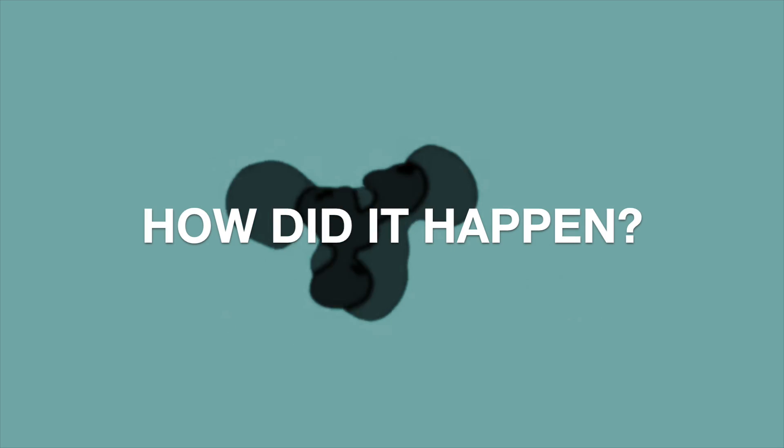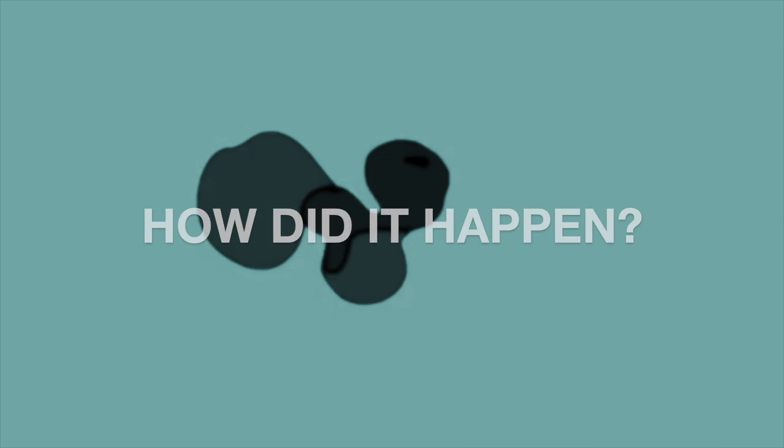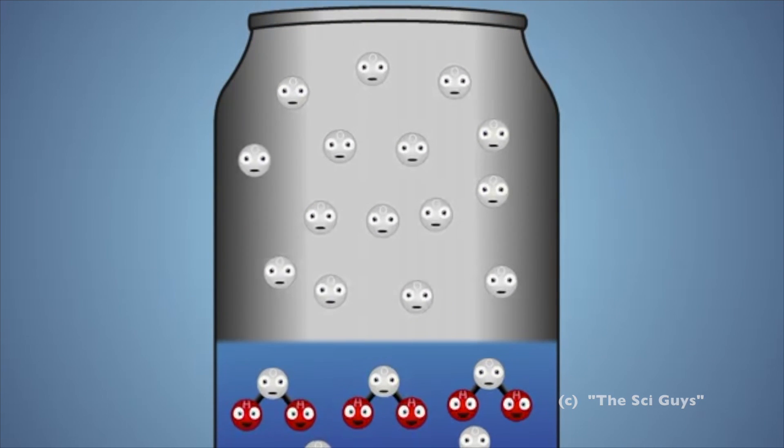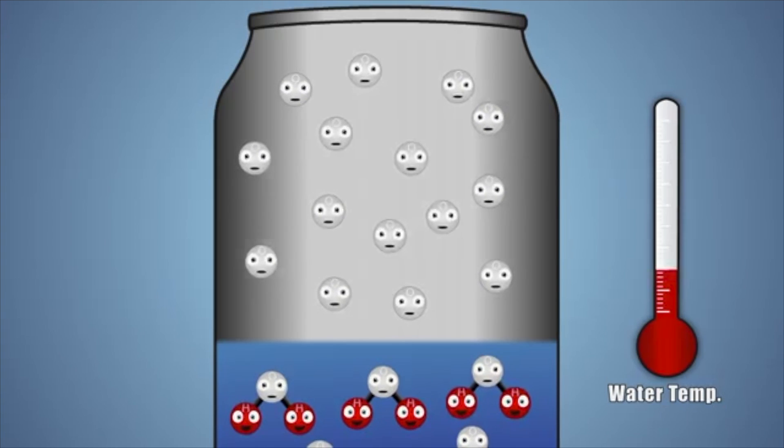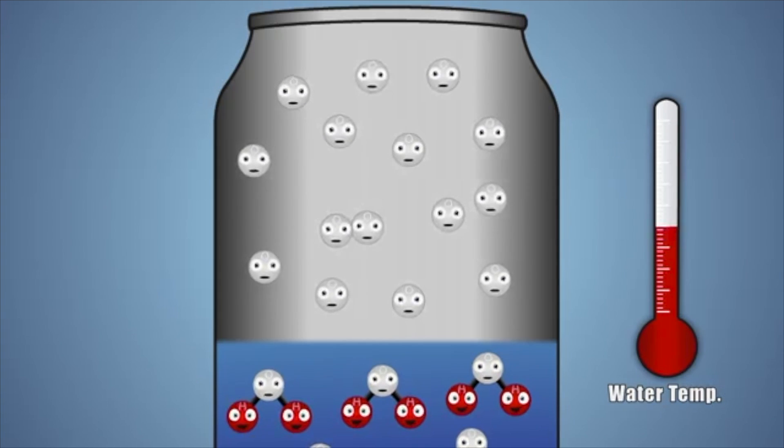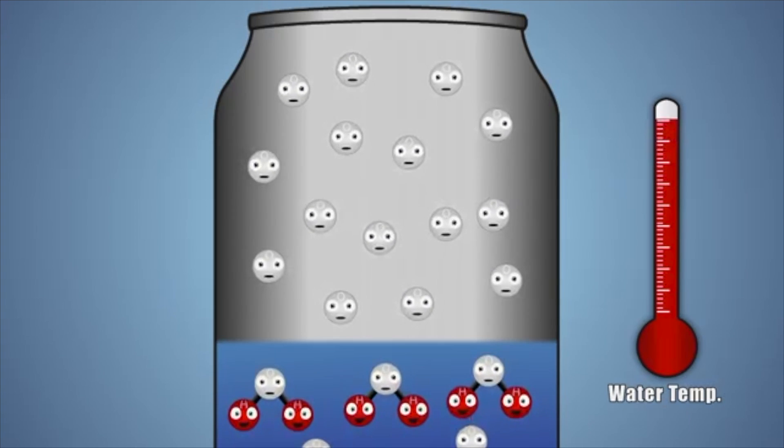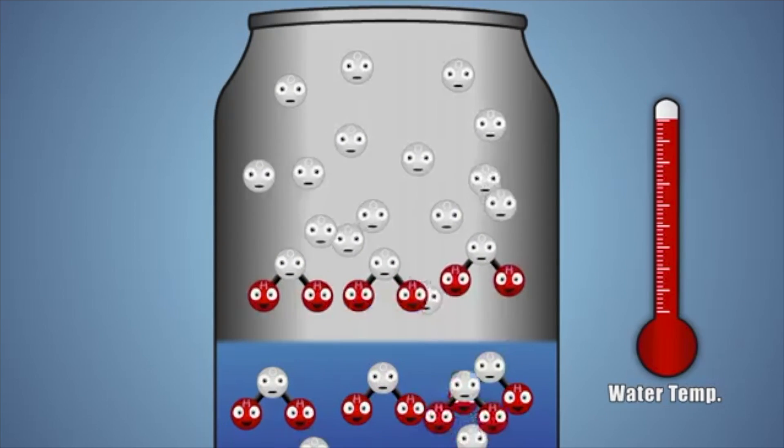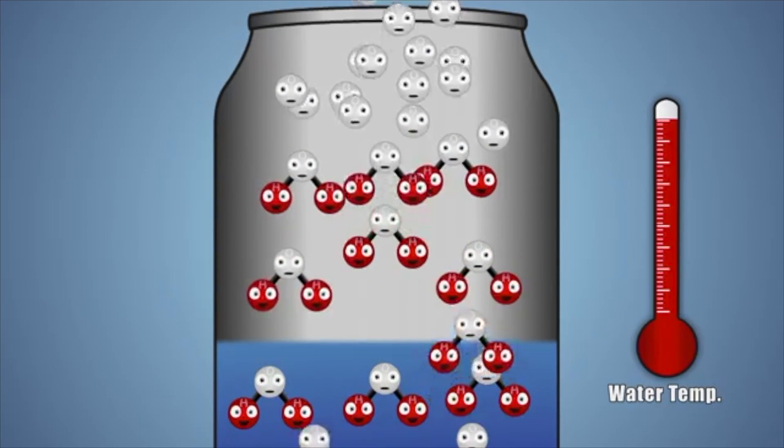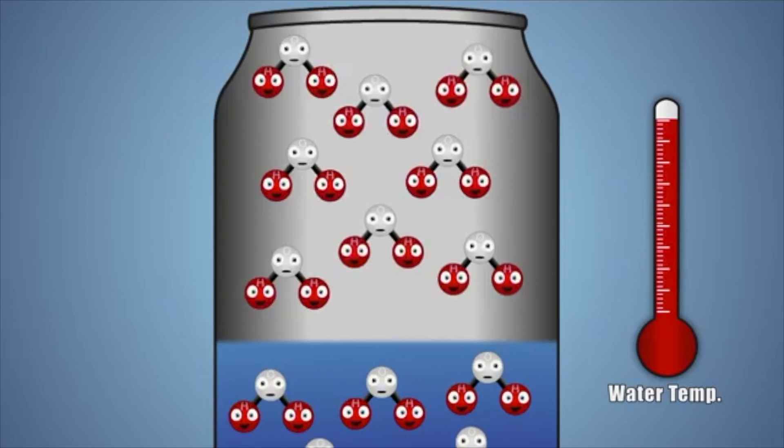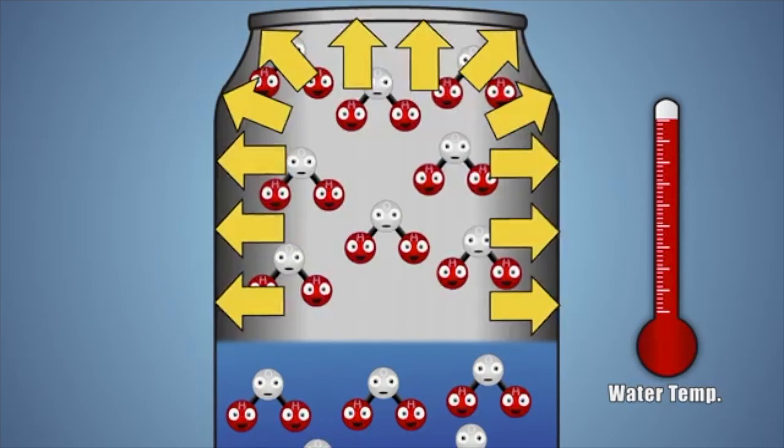So how did it happen? Before we actually heated the can, it was filled with liquid water and gaseous air molecules. As we added heat, it transferred energy to the liquid water causing its molecules to spread further. When enough energy was transferred to the water, it changes its state from liquid to a gas which is known as water vapor. This water vapor fills and presses against the sides of our can creating an increase of temperature.